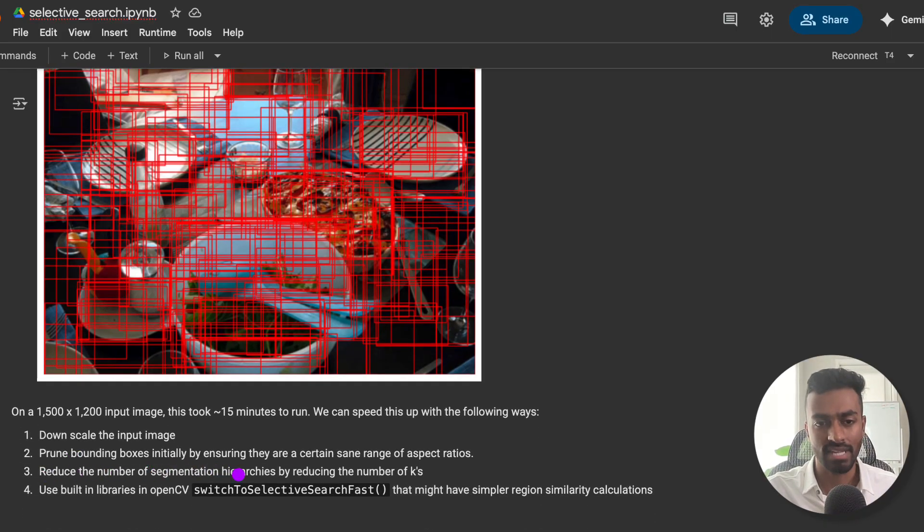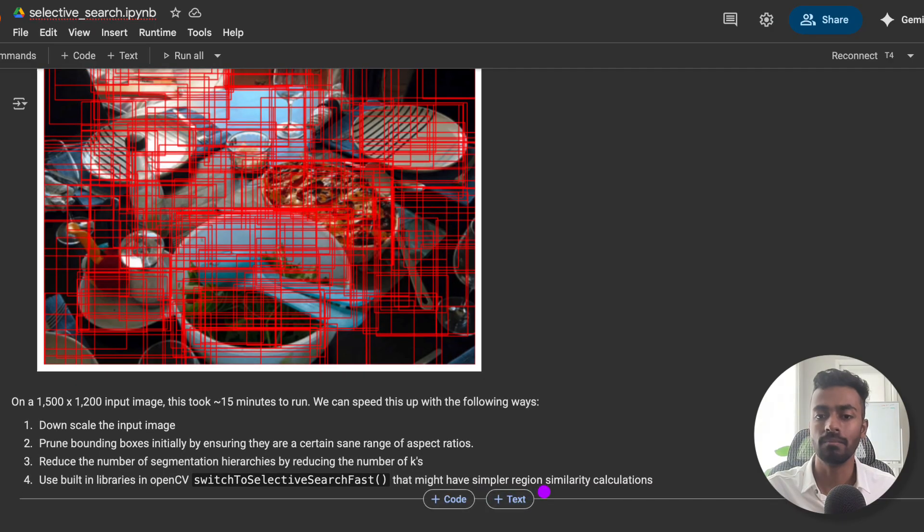Next is to reduce the number of segmentation hierarchies by reducing the number of Ks. So instead of taking 50, 150, 300, and all that, you can take probably a less number of Ks.